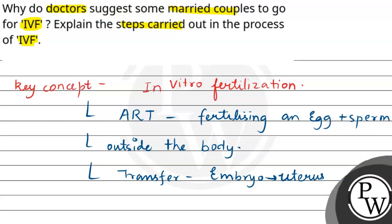Now, why do doctors recommend this process? First, infertility issues. In females, this can include blocked fallopian tubes, ovulation disorders, or endometriosis. In males, it can be low sperm count, poor sperm motility, or abnormal sperm. These are all cases where IVF may be recommended.